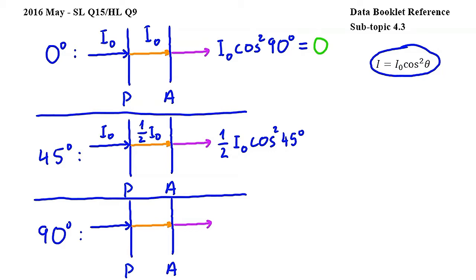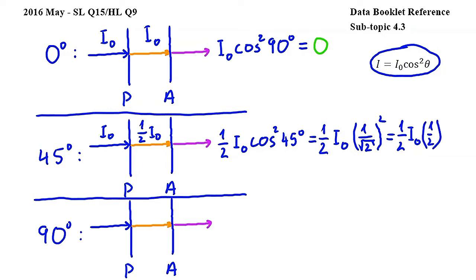Since cosine 45 degrees is 1 over square root of 2, we get one half I0 times 1 over square root of 2 squared. Working further, we get one half I0, and 1 over square root of 2 squared is one half. One half times one half is 1 over 4, or 0.25. So the intensity of the light emerging from A is 0.25 I0.